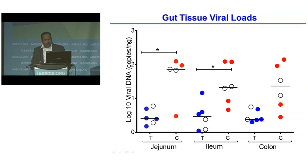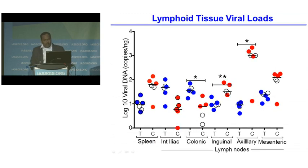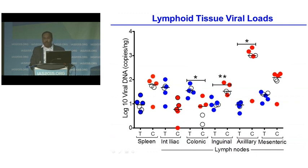In contrast, looking at gut tissue viral loads in the jejunum, ileum, and colon, the treated group shows very low or negative viral loads compared to control animals. Control animals show very high viral loads in the ileum and colon, suggesting that this antibody helps protect gut tissue viral loads. This protective effect is more pronounced in lymphoid tissue viral loads. Interestingly, in the internal iliac lymph node and colonic lymph node, the treated groups have higher viral loads compared to control animals, while in other tissues, anti-alpha-4 beta-7 treated animals show lower viral loads.